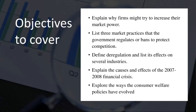Second would be bid rigging. In this practice, competing firms collude to decide the winner of a bid before the bidding process, limiting competition and inflating prices. Bid rigging is also illegal and prohibited. Third would be market allocation, where companies divide markets among themselves to reduce competitive pressures — for example, agreeing not to compete in a certain geographical region. Such market allocation practices are considered anti-competitive and are regulated by authorities.